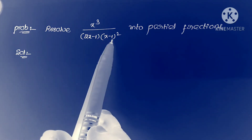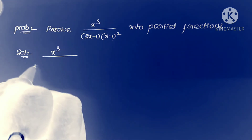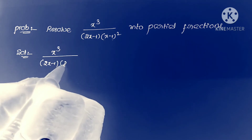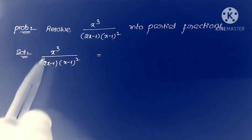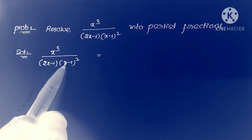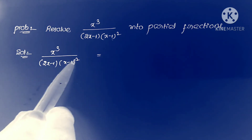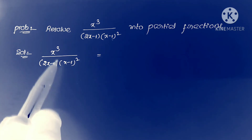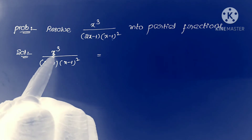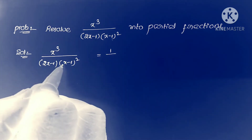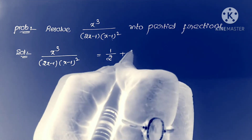Second problem: resolve x³ / [(2x-1)(x-1)²] into partial fractions. The degree of the numerator is 3, and the degree of the denominator is also 3 (since 2x · x² = 2x³). Both have the same power, so we take the ratio of leading coefficients: 1 / 2, giving quotient 1/2.